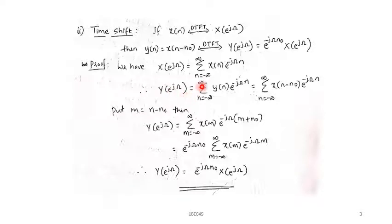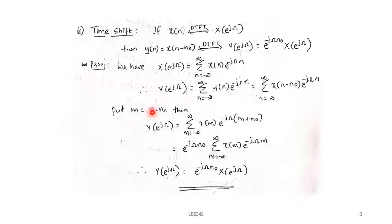Y(e^{j\omega}) = summation over n of y(n)·e^{-j\omega n}. Substituting y(n) = x(n − n₀), I replace n − n₀ with the variable m, so m = n − n₀ and n = m + n₀. Applying the limit: when n = −∞, m = −∞ and when n = +∞, m = +∞, so there is no change in the limits.